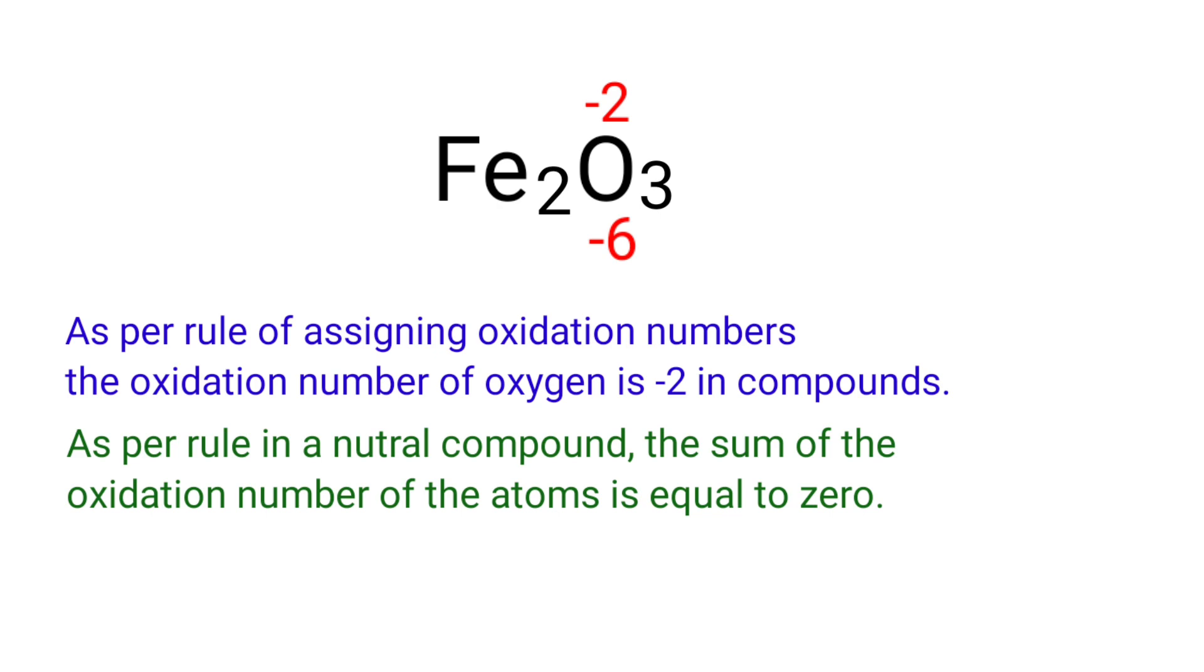As per rule in a neutral compound, the sum of the oxidation number of the atoms is equal to zero. So the numbers along the bottom must add up to zero. So the number under Fe2 must be plus 6.